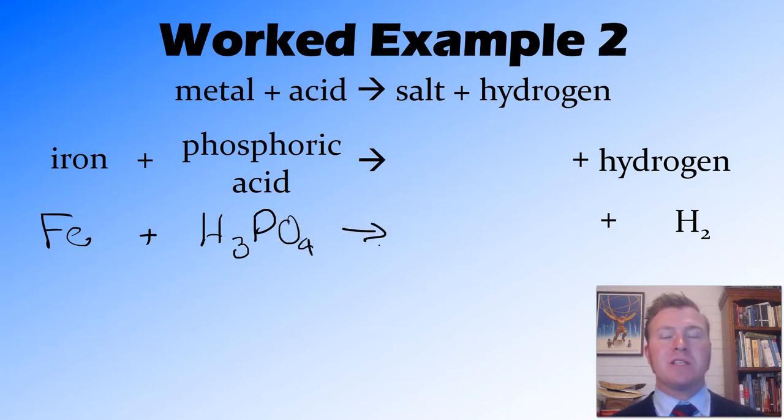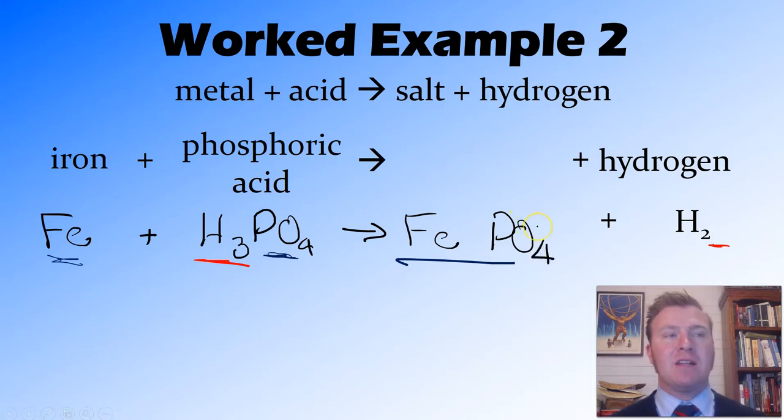Now we need to work out what this salt is going to be. Once again, this hydrogen on this side is going to react to form this hydrogen on this side. We need to have a look at what's left to form the salt. On the reactant side, we've got iron and phosphate. Therefore, our product is going to be iron phosphate, FePO4. The valency of phosphate is 3-, I'll assume that this is going to be iron 3 phosphate. That's actually balanced there.